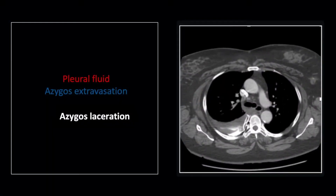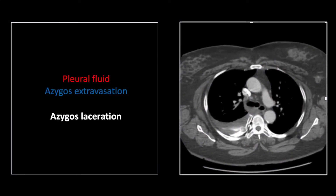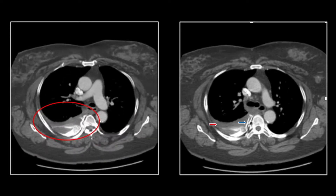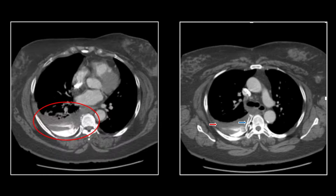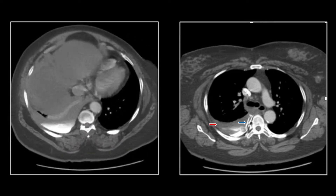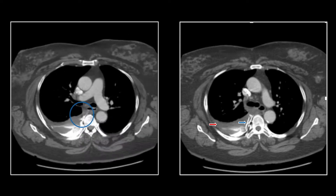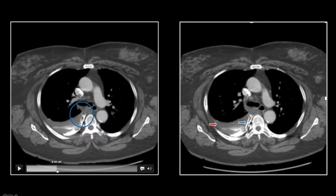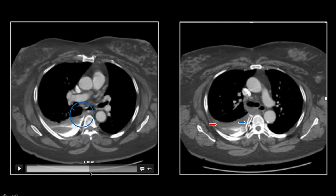Our next case is an azygous laceration. There is a large pleural fluid collection on the right with layering contrast, all extending from a contrast-enhancing azygous vein. The fluid collection with layering contrast and its source on the azygous arch can be seen clearly — there it is, actively hemorrhaging.